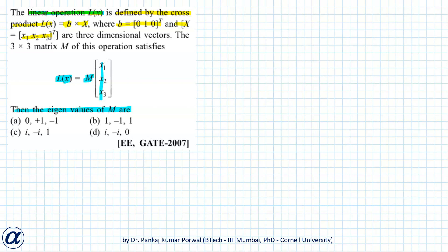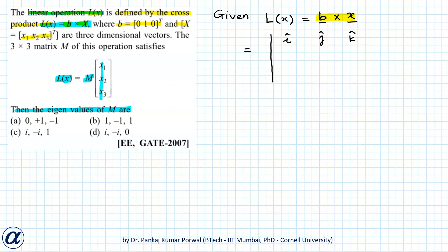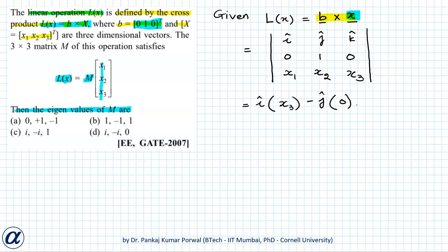Let's first find what is the matrix M. For that, we need to start with Lx as a cross product. We are given Lx equals vector b cross vector x, and as we know, the cross product can be evaluated as a determinant. That will be i-cap, j-cap, k-cap, then vector b which is (0, 1, 0), and then vector x which is (x1, x2, x3). This gives us i-cap·x3 minus j-cap·0 plus k-cap·(minus x1).